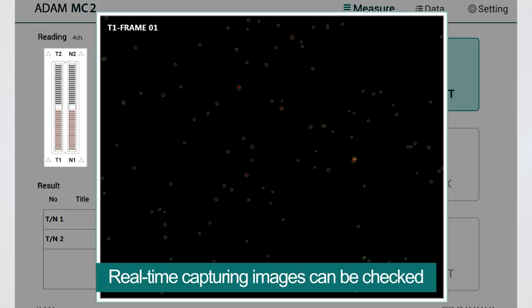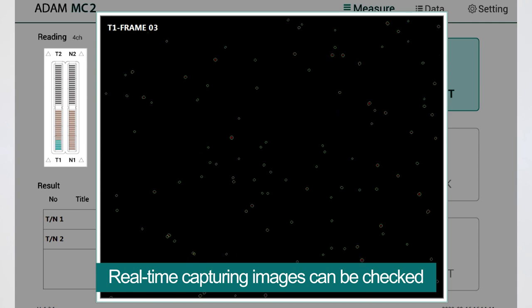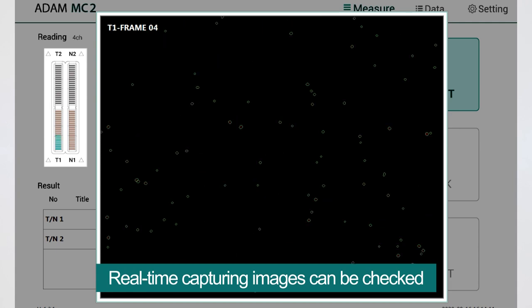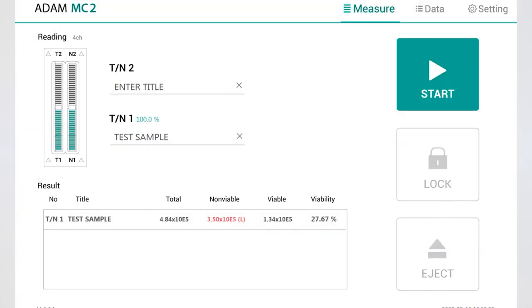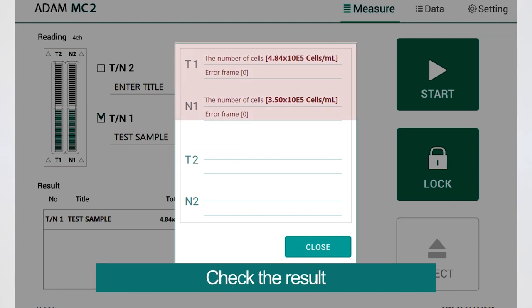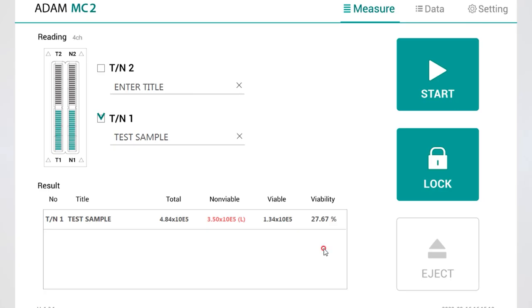While the test is in progress, you can check the cell images of each channel. The result will be displayed after being automatically calculated by Adam MC2 software. The viability will be automatically calculated after each measurement of the total cells and the non-viable cells.